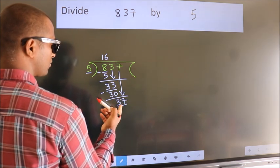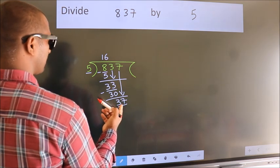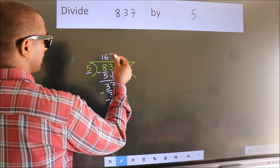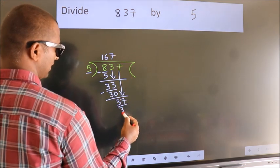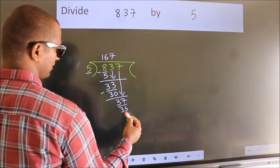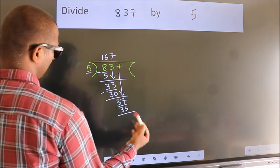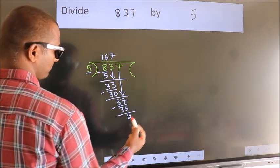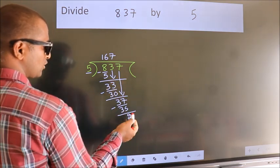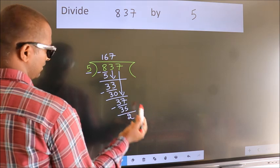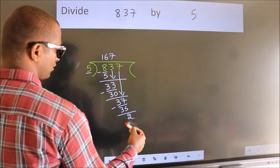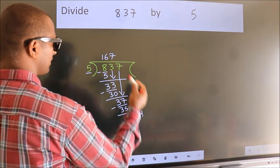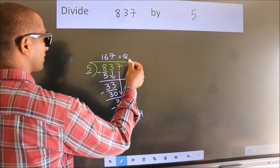A number close to 37 in the 5 table is 5 times 7, which is 35. Now we subtract — we get 2. No more numbers to bring down, so we stop here. This is our remainder. This is our quotient.